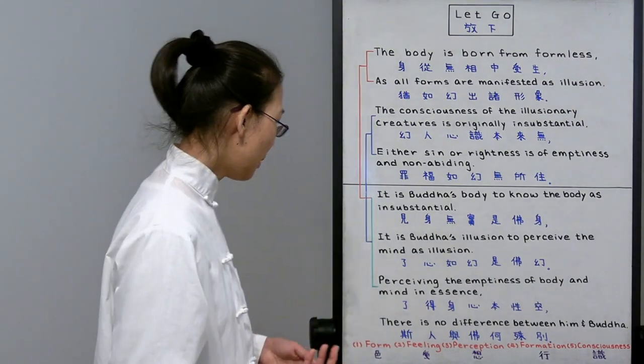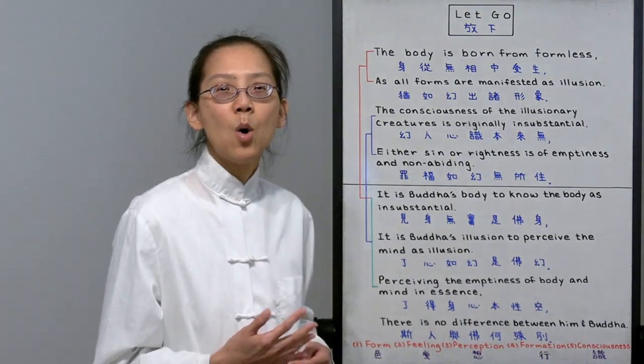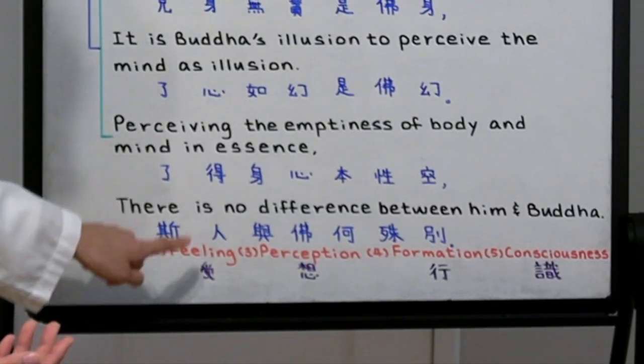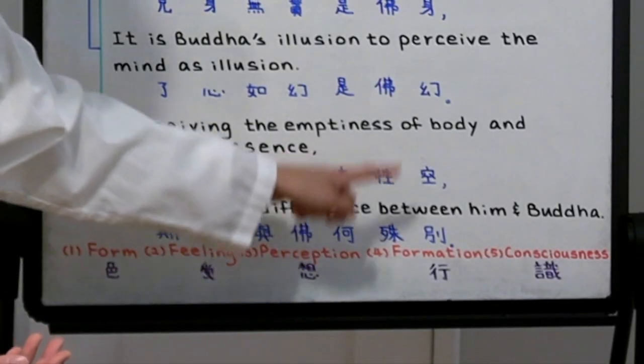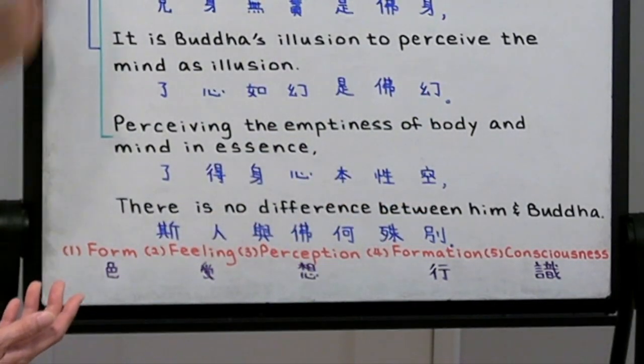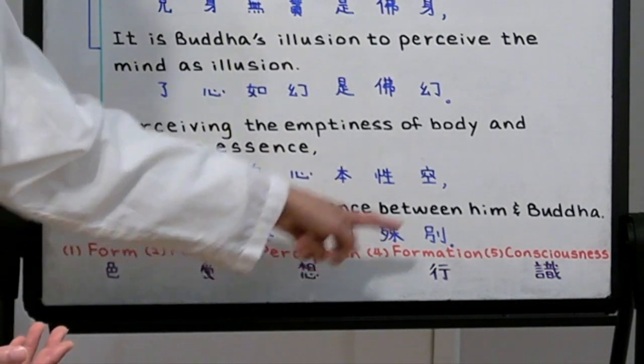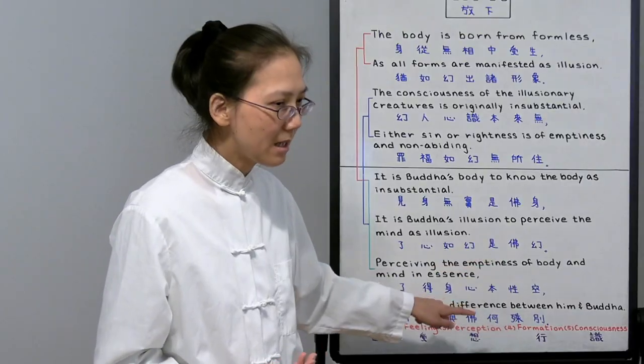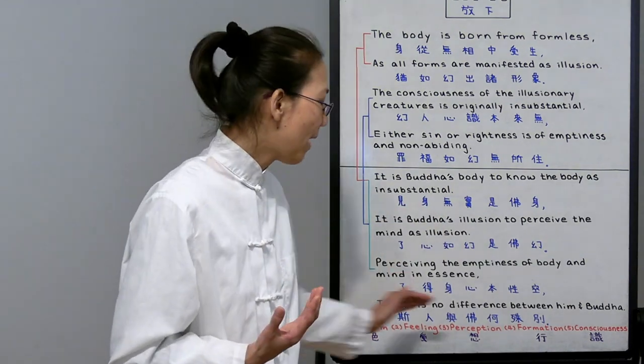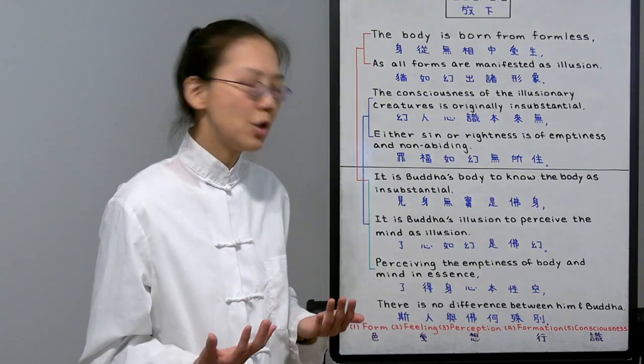In Buddhism, we talk about our body and mind as the five aggregates or the five skandhas. It's made out of form, feeling, perception, mental formation, and consciousness. So the body is the form. The other four - feeling, perception, mental formation, and consciousness - make up our mind. We are all clinging to these five skandhas and we don't even know it's our delusion.